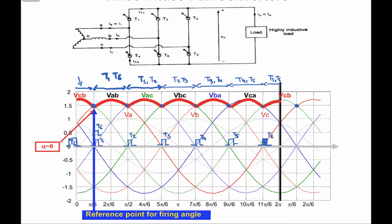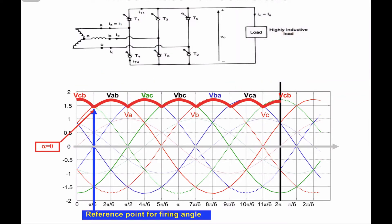The operation at α = 0° is slightly different from a diode bridge — in a diode bridge commutation is automatic, but here the path of current flow depends on which pair of thyristors you turn on. If you turn on T1 and T6, the path is from phase A to B and the line voltage VAB appears. If you turn on T1 and T2, conduction is from A to C, and so on. With symmetric firing at α = 0°, you get the full output voltage waveform.